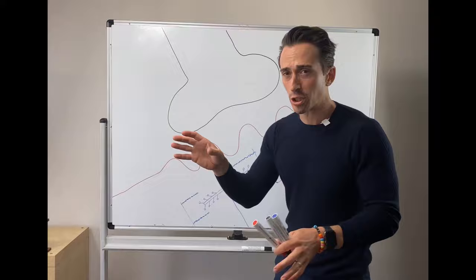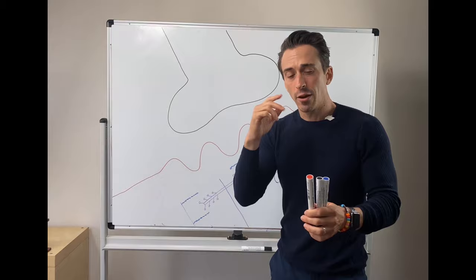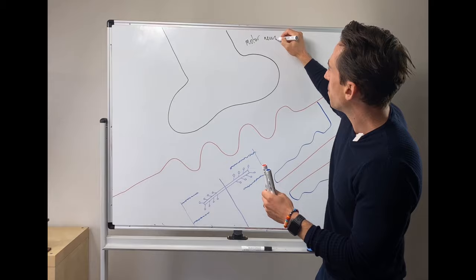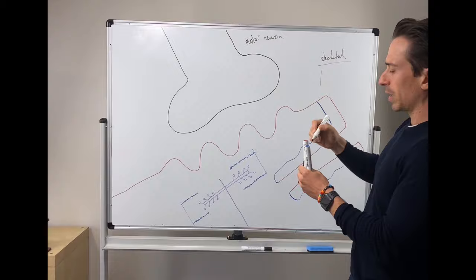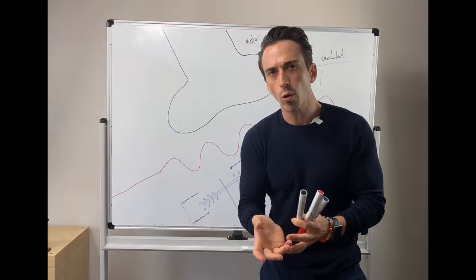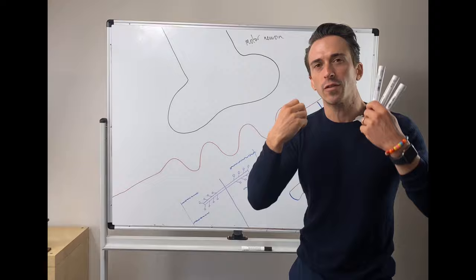The neuromuscular junction is basically the point at which a neuron speaks to a muscle to tell that muscle to contract. To be specific, the neuron is going to be a motor neuron and the muscle is going to be skeletal muscle. There are three different types of muscle: cardiac muscle of the heart, smooth muscle that lines the hollow organs, and skeletal muscle, which is attached to the bones and allows us to consciously move.